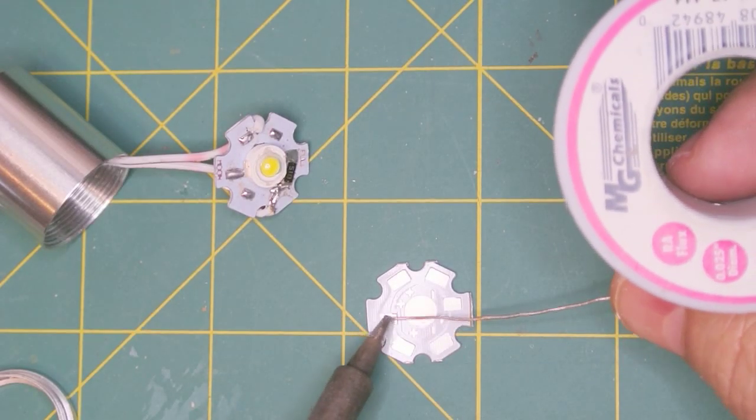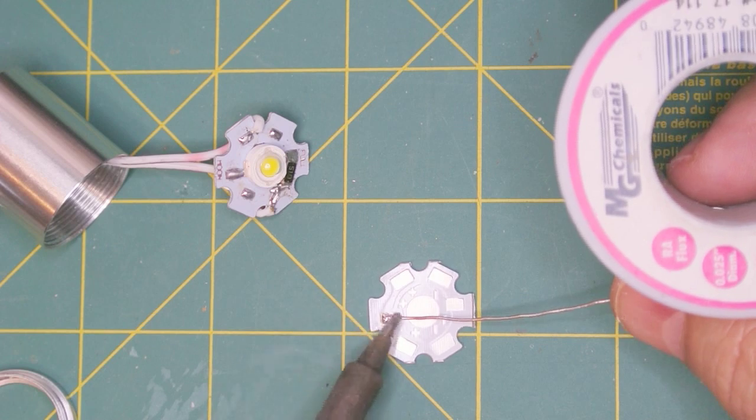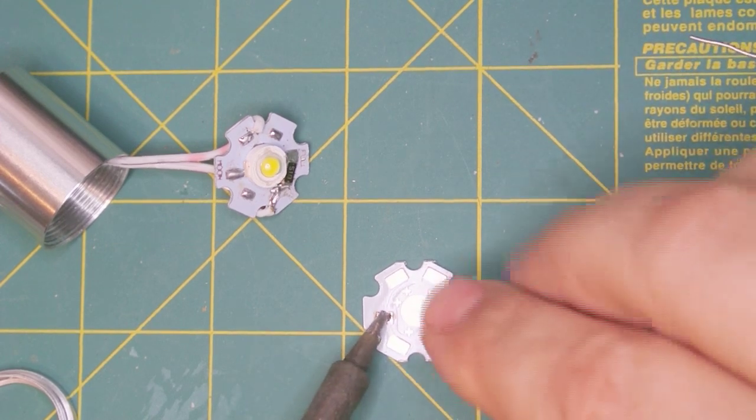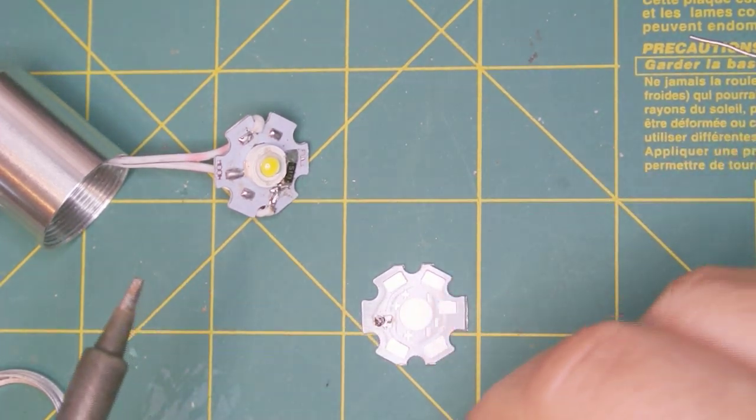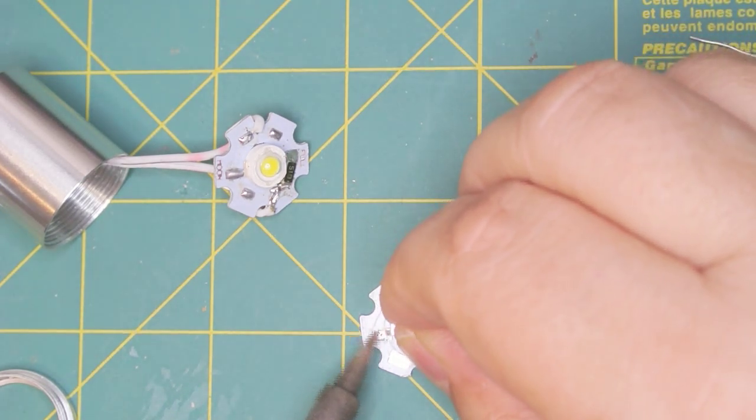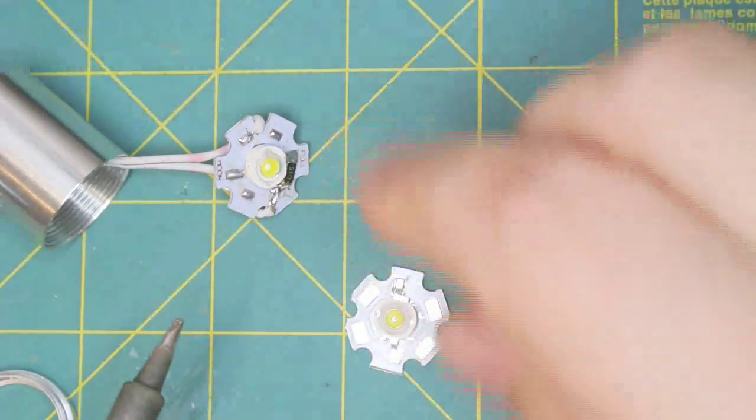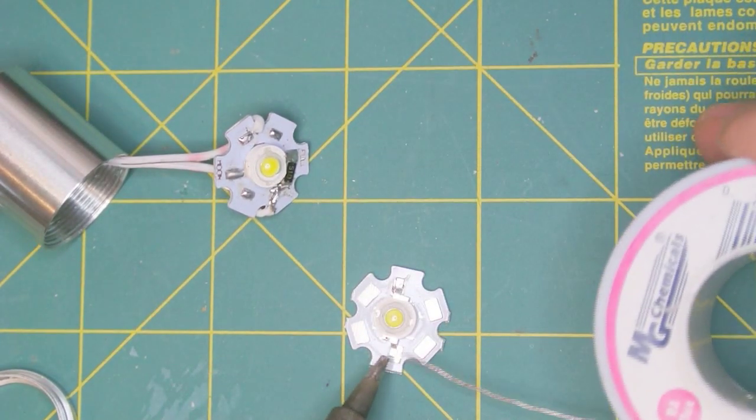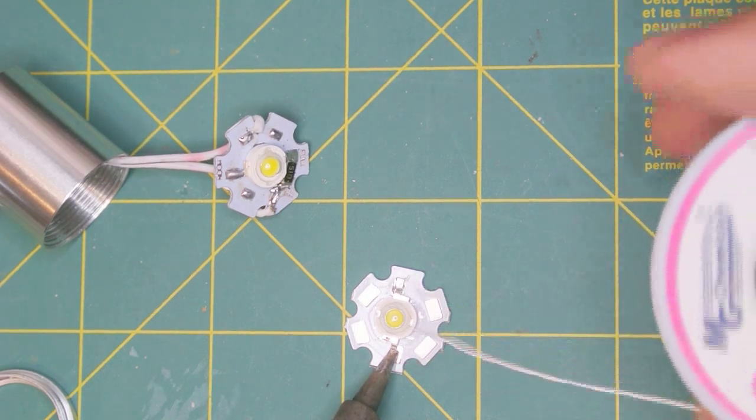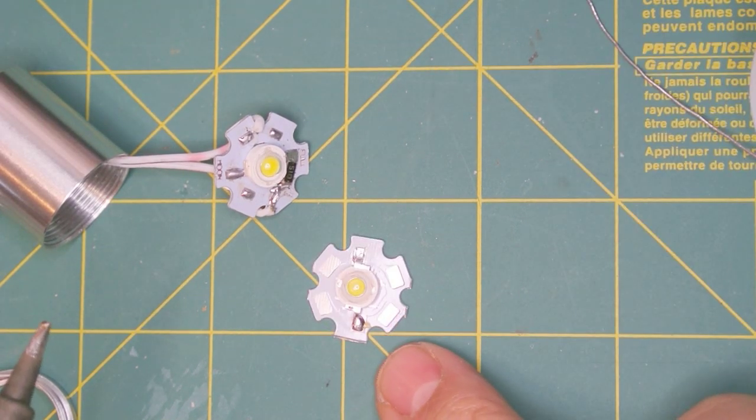I'm actually going to pre-tin the positive side of the LED pad. I simply hold this on until it heats up enough, it solders the LED to the board. Then simply turn it to the minus side and do the same thing here. I should caution you that this can get rather hot.